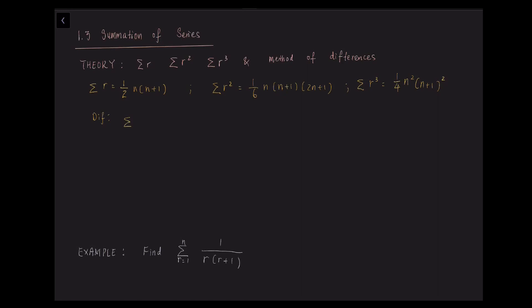The second theory you need to apply in the exam is called the method of differences. For example, we have the summation of f(n) minus f(n plus 1), where f(n plus 1) is the term after f(n). What this method means is essentially the terms in between will cancel each other out.